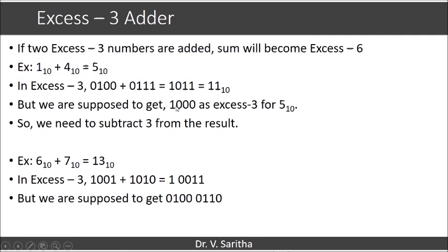But we are supposed to get 8, that is 1000 as XS3 for 5 base 10. So here what happens? The difference is nothing but 3. That is, we need to subtract 3 from the result. Instead of getting 8, we are getting 11 actually. So when we subtract 3 from the result, when we subtract 3 from this 1011, then we will get 1000, which we need as the correct answer.